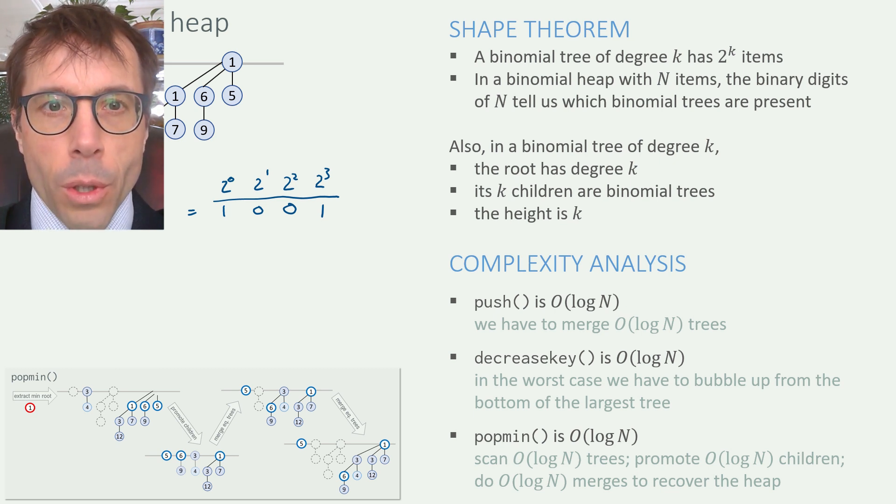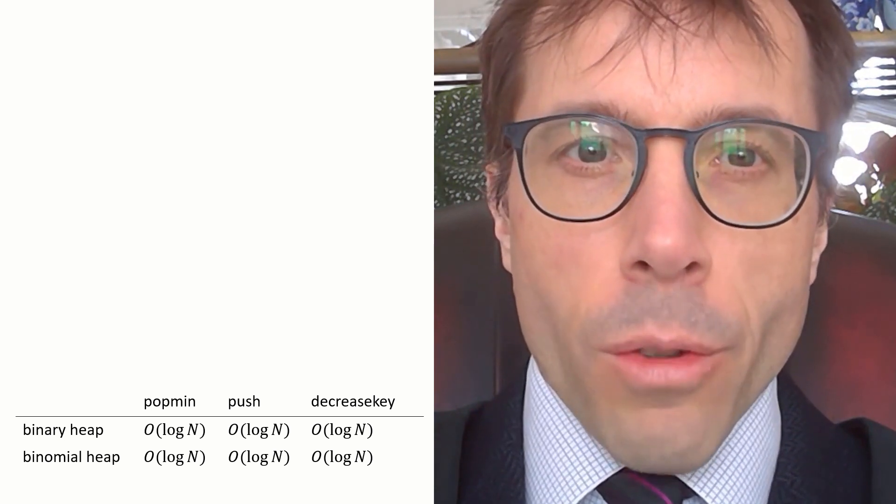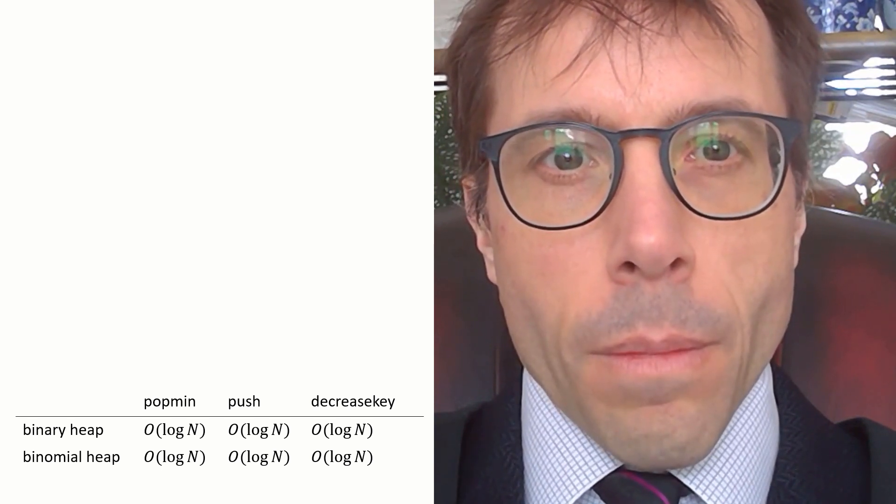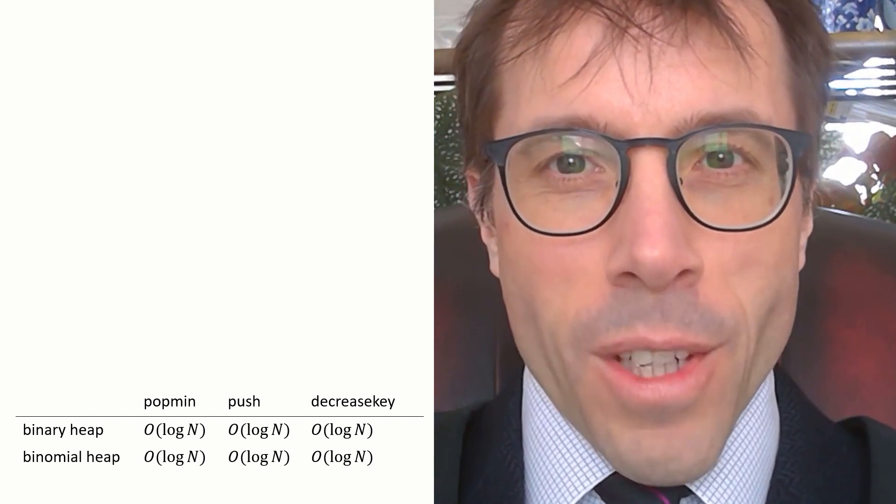Okay, so that's the binomial heap. I wanted to go through all these operations and their complexities, because we're going to push really hard to get a very fast priority queue, and we'll end up needing lots of careful thinking along these lines about tree shapes and number of mergers and so on. Let's summarize where we've gotten to. We've looked at two implementations of the priority queue, the binary heap and the binomial heap, and these are the complexities that we found. It all looks a bit like a waste of time. All three operations are big O of log n on both implementations.